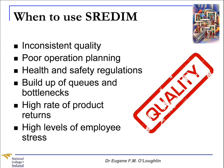When should we use SREDM? Well, if you're experiencing inconsistent quality in products and services, or there's poor operation planning, if you have health and safety regulations being ignored or not understood, or if there's a build-up of queues and bottlenecks, or even high levels of employee stress and fatigue. You might look at improving a process to eliminate these inconsistencies contributing to poor quality. SREDM is a formal process improvement procedure that you will hopefully find useful.